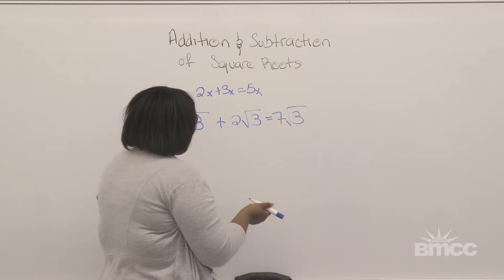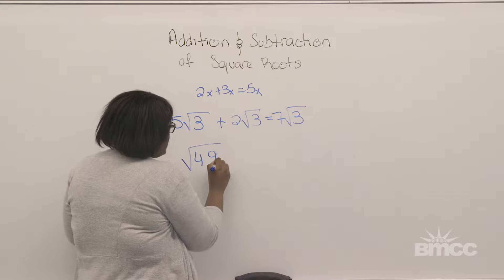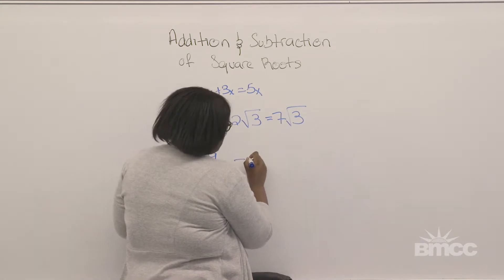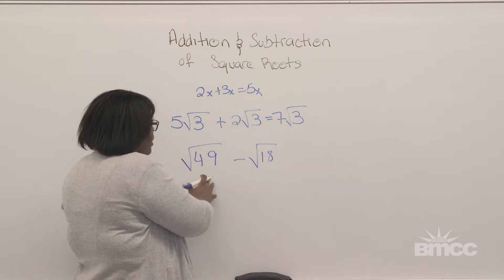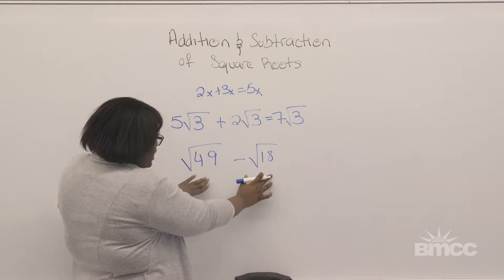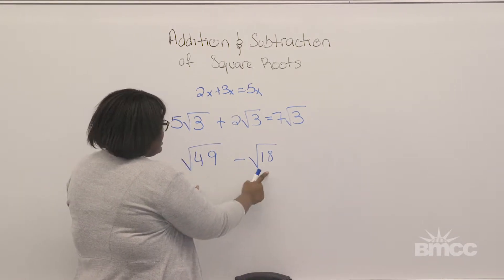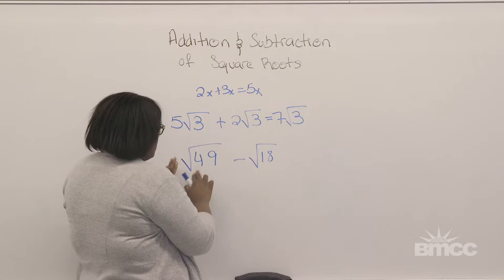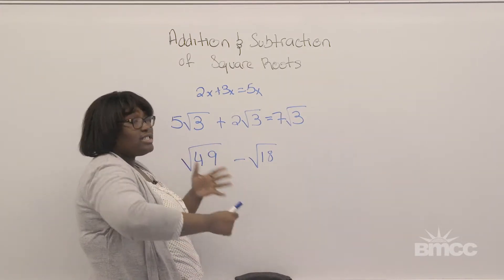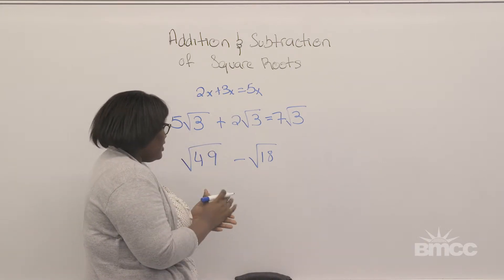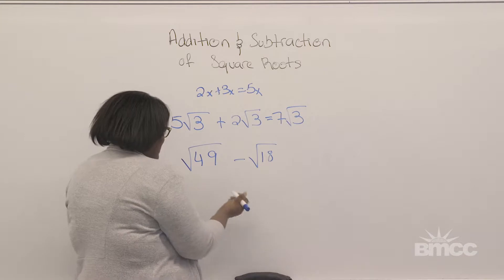So if we were to have the square root of 49 minus the square root of 18 — these two numbers are not the same, but they can be simplified. The square root of 49: 49 is a perfect square, which we know is 7 times 7, so the square root of 49 is 7.